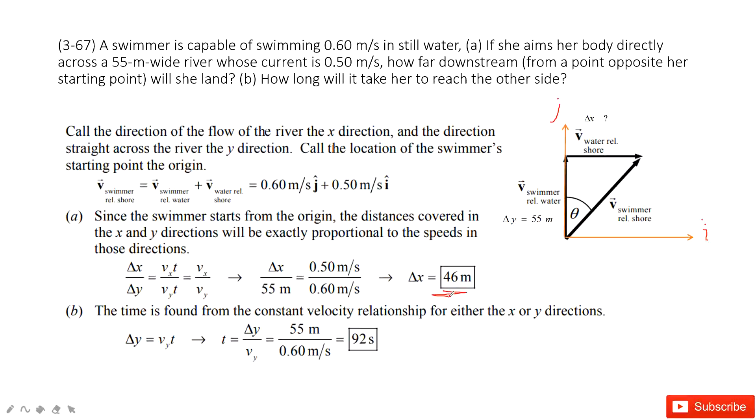The second problem asks you how long will it take her to reach the other side. This asks for the time taken. We just look at the Y component, the j component. We know the displacement in Y is 55 meters, and the velocity of the swimmer to the water is 0.6 m/s. So it's super easy - we can get the time by dividing the displacement in Y by the velocity in Y. Thank you.